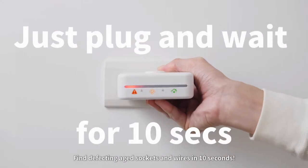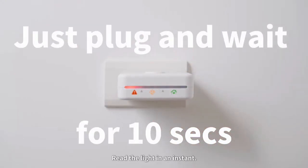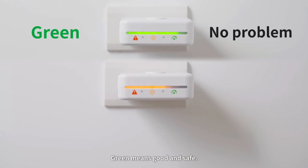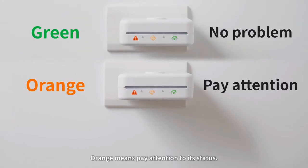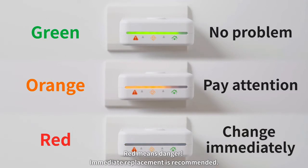Find defective aged sockets and wires in 10 seconds. Read the light in an instant. Green means good and safe. Orange means pay attention to its status. Red means danger. Immediate replacement is recommended.